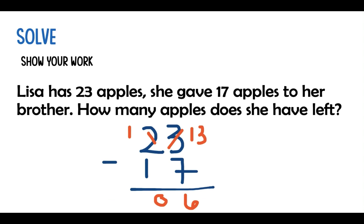So, I am going to subtract 23 minus 17, and that is equal to 6. So, now I have my answer.